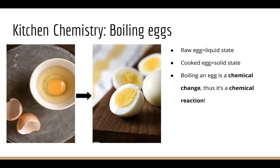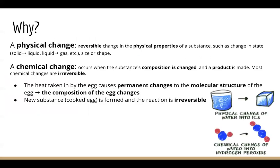Now here's the question: how do we identify if a reaction is a physical change or if it's a chemical change? We say that a physical change is a reversible change in the physical properties of a substance, such as a change in state, size, or shape. A common example I like to use is when you melt an ice cube to water — it's a change in state. The water is still water, it's just the state of the water that changed. And same thing when you evaporate liquid water into water vapor — the water itself didn't change, it's just the state of the water that changed.